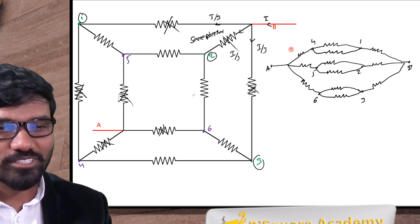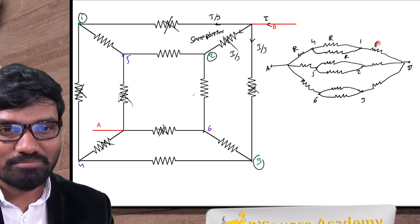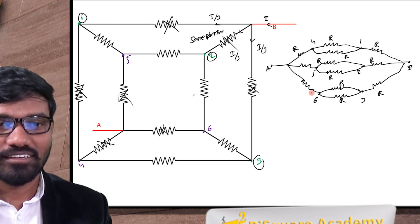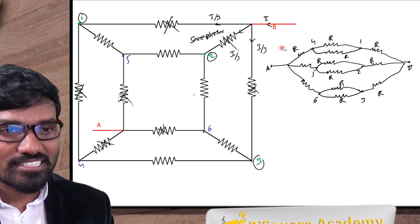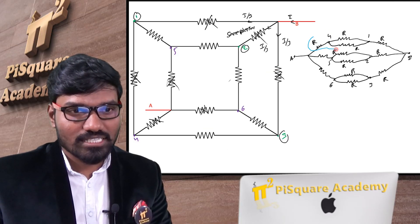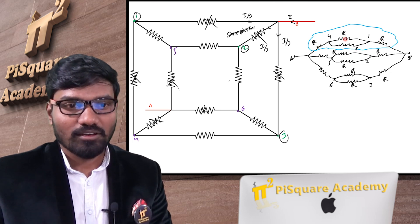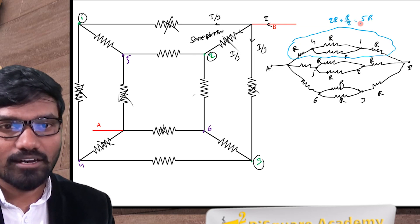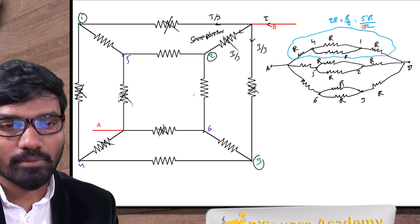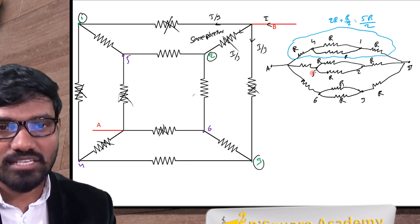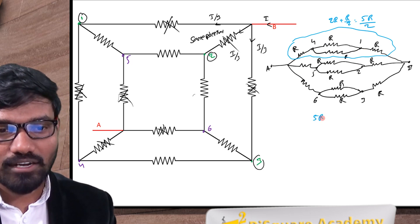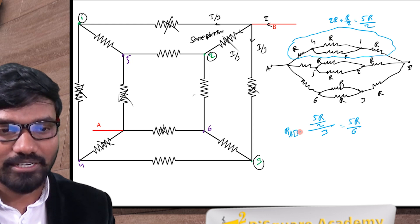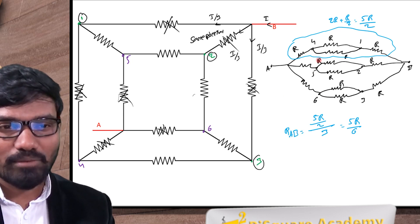So now it is easy — each branch has R, R, R, R, R, R, R, R, R. The resultant resistance of this entire wing is R + R + R/2, which is 2R + R/2, giving 5R/2. All three branches are in parallel, each having 5R/2, so 5R/2 divided by 3 gives R_AB = 5R/6.